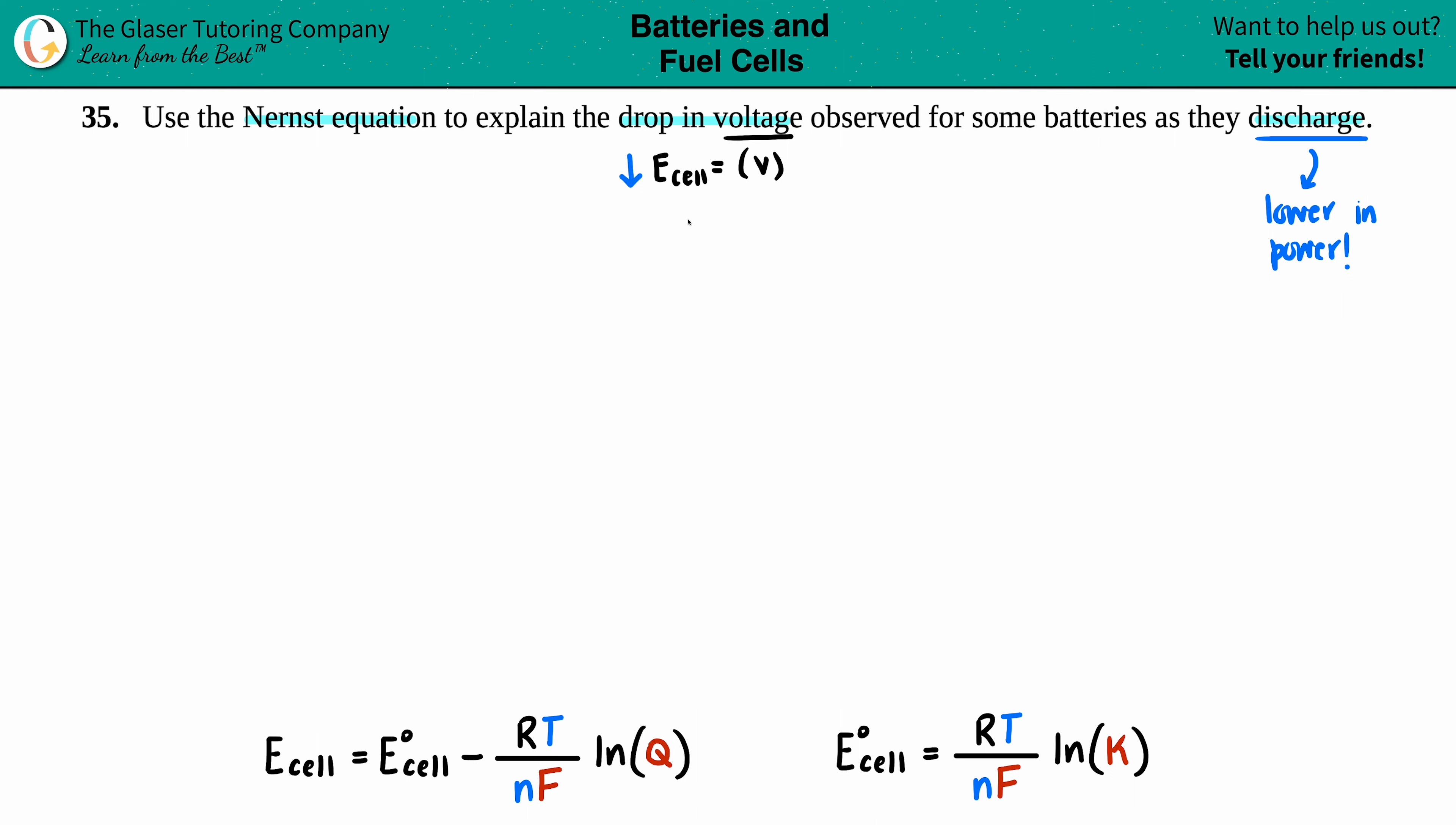And if that's the case, the two variables that talk about equilibrium are Q, the reaction quotient, and K. If your reaction is getting closer to equilibrium, Q should roughly be equal to K.